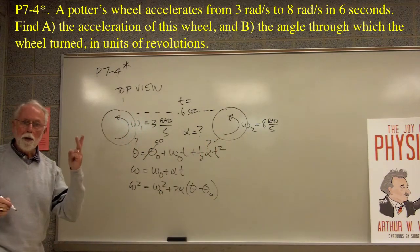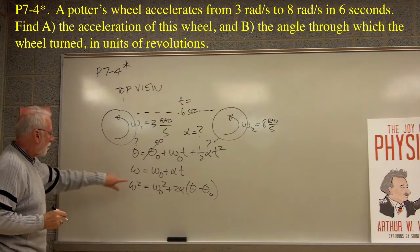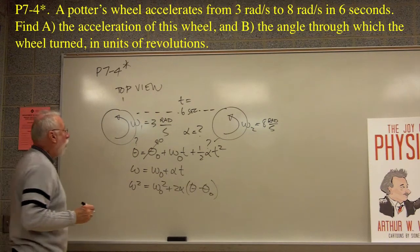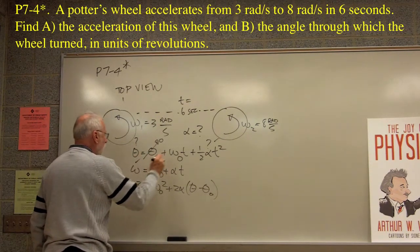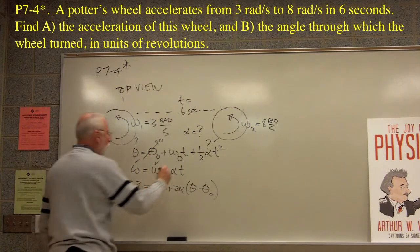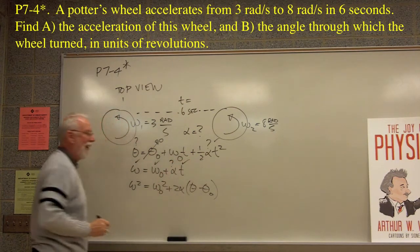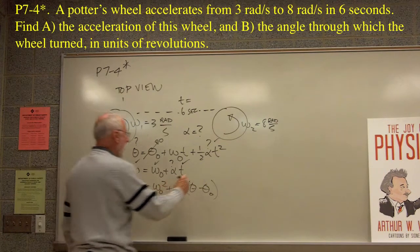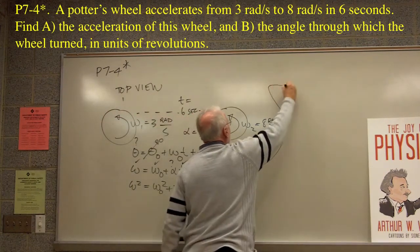That doesn't help us. One equation, two unknowns. No good. What about this one? Omega. Yeah, we know the omega. We know the initial omega. We don't know alpha. We do know t. Ha-ha. We're in business, aren't we? So now we can solve this one.